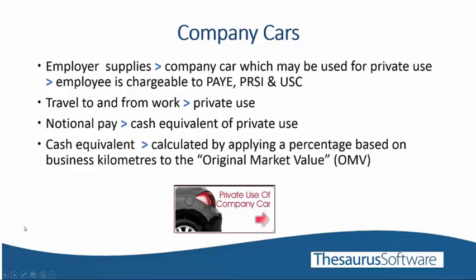Where an employer supplies an employee with a company car which may be used for private use, the employee is chargeable to PAYE, USC and PRSI in respect of that use. Travel to and from work is considered to be private use. The cash equivalent is determined by applying a percentage based on the business kilometres the employee does to the original market value of the vehicle. If an employee makes a contribution towards the running cost of the car, the value of the Benefit in Kind will be reduced, but the contribution must be made directly to the employer.